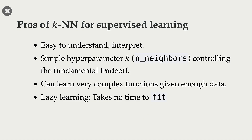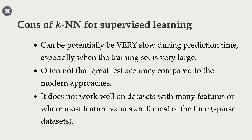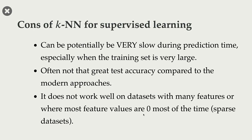But when it's time to predict, it has to find the distance of the new query point to all other examples. So if you look at the fit and score time of cross-validate of KNN classifier, you will see that your score time is higher than your fit time. In general, one disadvantage of KNNs is that it is slow during prediction time. Usually, prediction time is more important because many times we want real-time predictions.